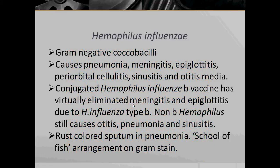Haemophilus influenzae, a Gram-negative Coccobacillus, causes pneumonia, meningitis, epiglottitis, periorbital cellulitis, sinusitis, and otitis media. The conjugated Haemophilus influenzae vaccine has virtually eliminated meningitis and epiglottitis due to Haemophilus influenzae type B. Non-type B Haemophilus still causes otitis, pneumonia, and sinusitis. Infection is usually characterized by a rust-colored sputum in pneumonia, and upon Gram stain they exhibit a school of fish arrangement.